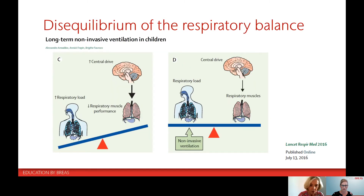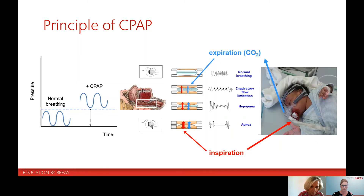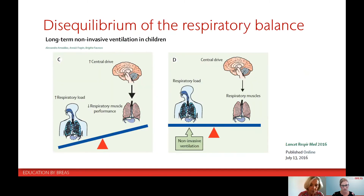However, as you can see on the figure on the left, there are some disorders that are responsible for a disruption of the respiratory balance. These disorders can concern either the central drive, the respiratory muscles, or the respiratory system. One of the most common respiratory disturbances is the weakness of the respiratory muscles, as we can observe in patients with neuromuscular disease. In this case, the central drive drives the respiratory muscles, but they are too weak to overcome the load of the respiratory system.